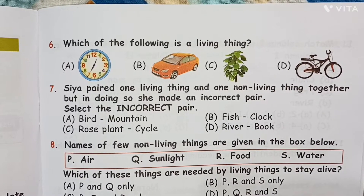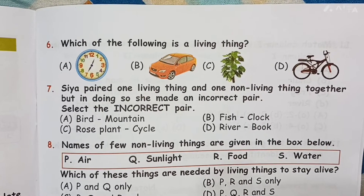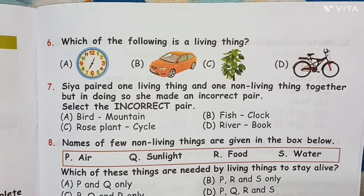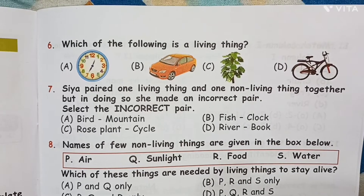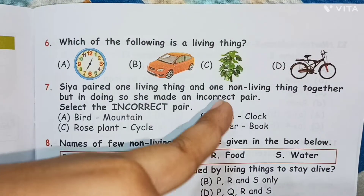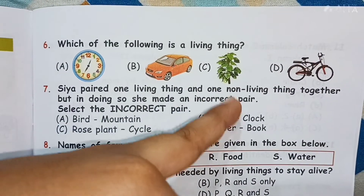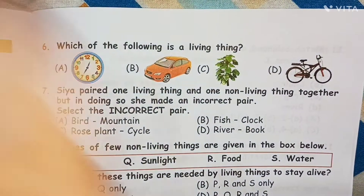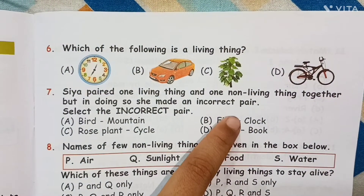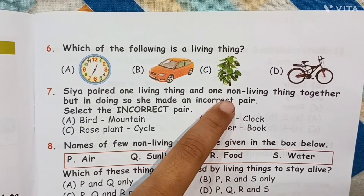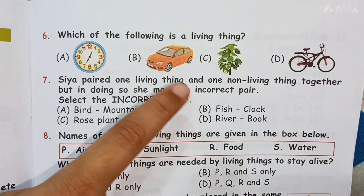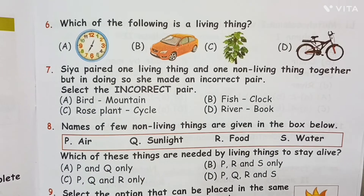Question 6: Which of the following is a living thing — clock, car, plant, cycle? Answer C, because it's a tree. A tree is a living thing.